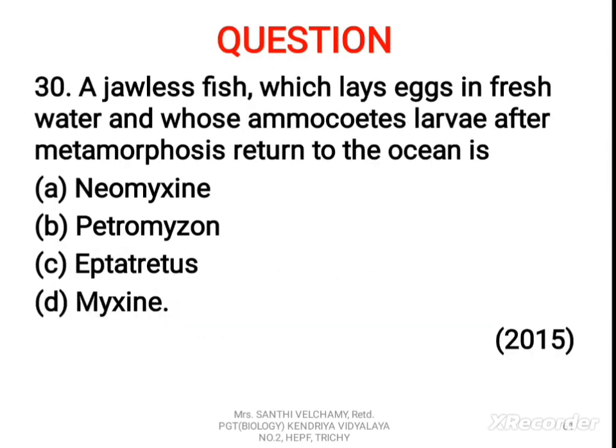30th question: a jawless fish which lays eggs in fresh water and whose ammocoetes larvae after metamorphosis return to the ocean is A) Neomyxine, B) Petromyzon, C) Eptatretus, D) Myxine. The correct answer is B, Petromyzon. Petromyzon is a lamprey and belongs to class Cyclostomata of phylum Chordata.